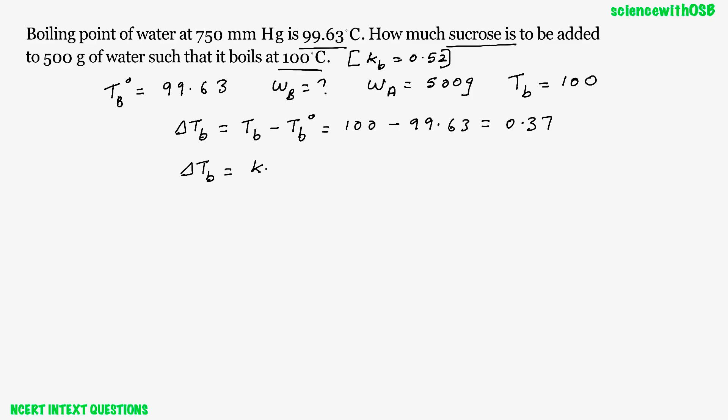What is delta TB? KB into M molality. So you can expand it like KB into WB into 1000 by MB into WA. You already know this equation, right? Just substitute all values you know. See, delta TB you know, KB you know, MB you know, WA you know, all values you know. Okay, all values you know.